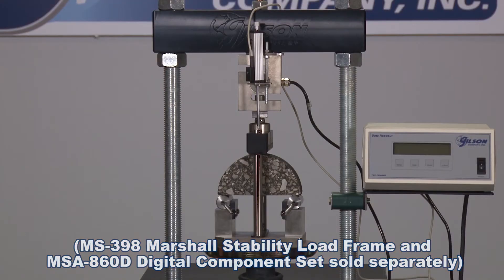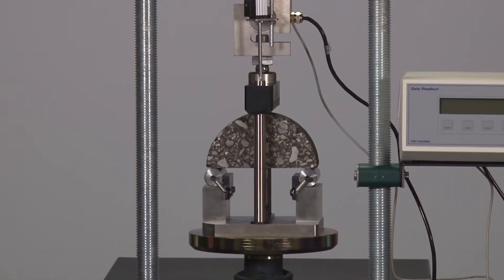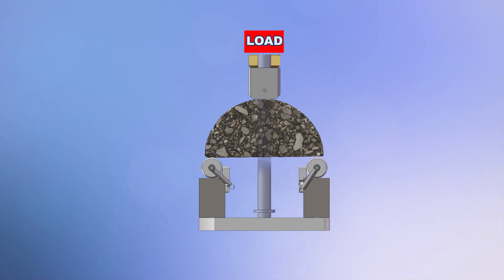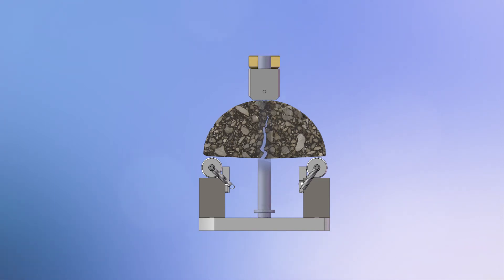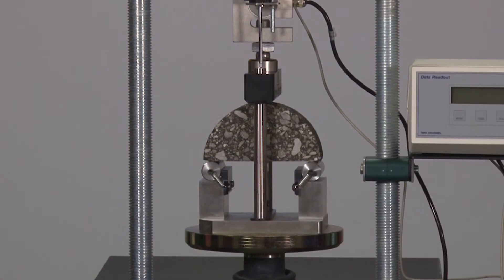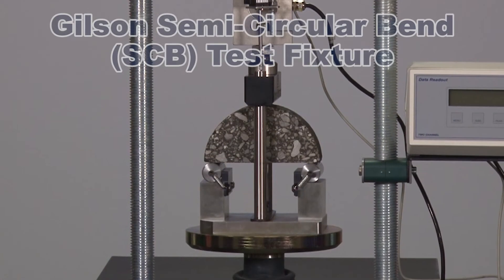The SCB fixture with specimen is placed on the platen of the Marshall Stability load frame, and a load is applied along the vertical diameter of the specimen until failure occurs. Load and displacement are measured to calculate test results.